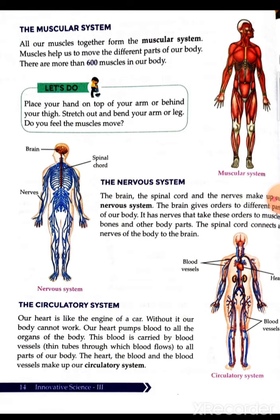The next system is the nervous system, which is also a very important system. The brain, the spinal cord, and the nerves make up our nervous system. Please underline this. The brain gives orders to the different parts of our body through nerves that take these orders to muscles, bones, and other body parts. The spinal cord connects all the nerves of the body to the brain.